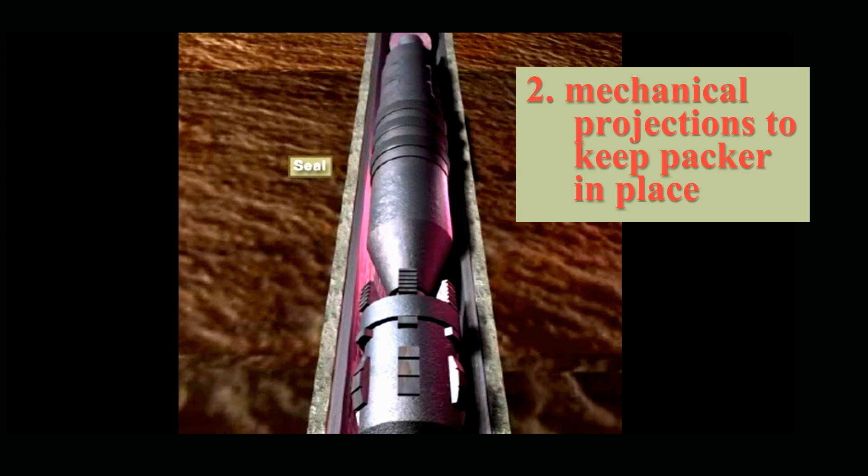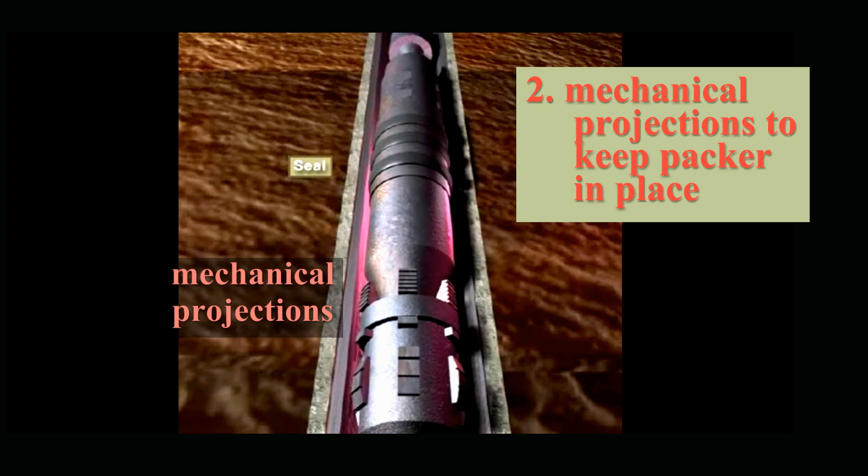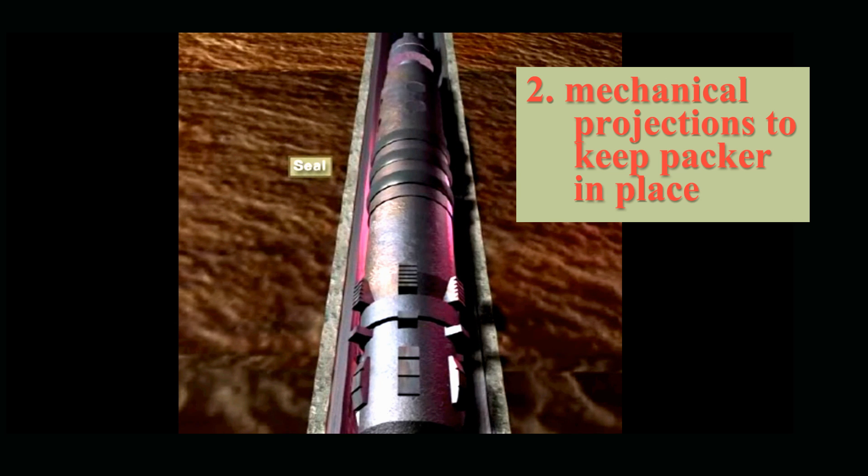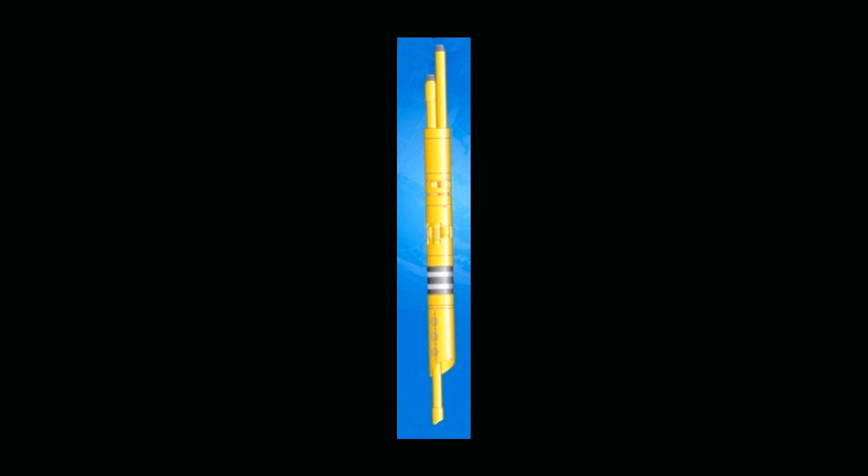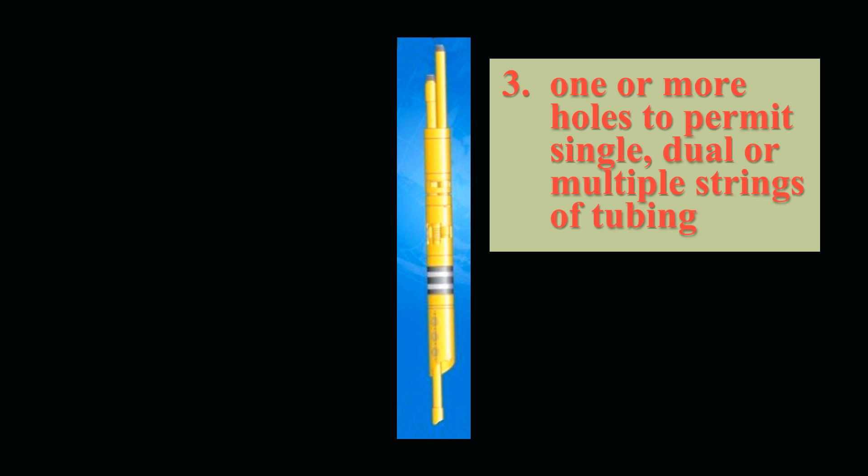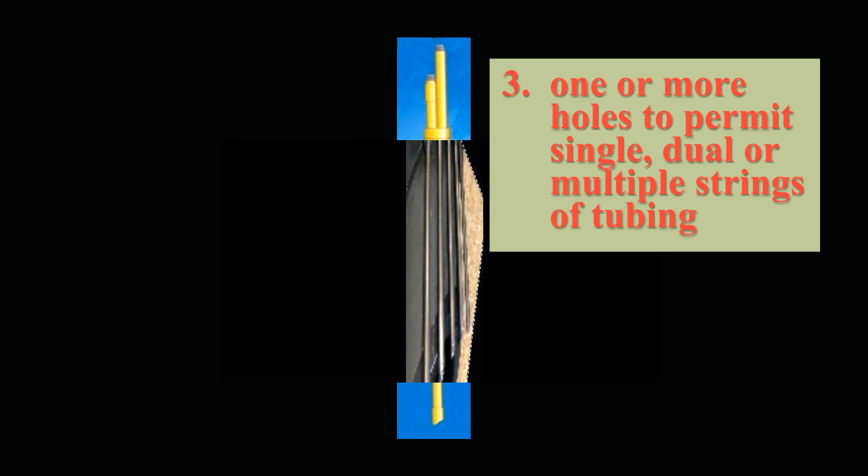Second, they all have mechanical projections that dig into the casing to keep the packers solidly in place. Third, they all have one or more holes for vertical penetrations which permit single, dual, or multiple strings of tubing to pass through the packer.